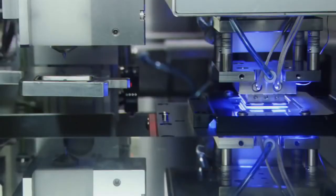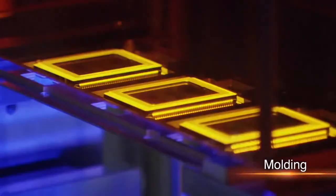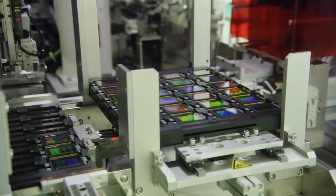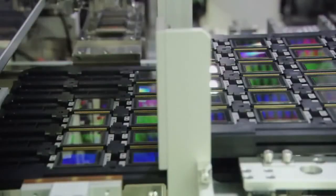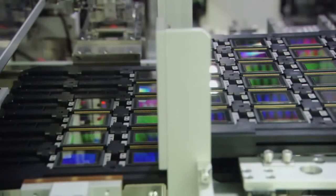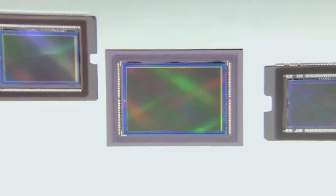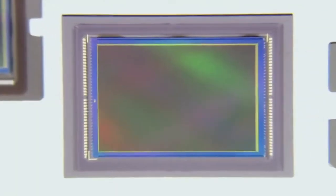After bonding and other processes, the sensor unit is complete. Canon's entirely automated production process ensures that each delicate image sensor meets the strictest standards of quality. Canon has nurtured its sensor technology since the beginning, and now it's flourishing.